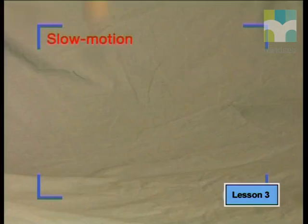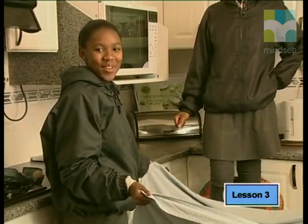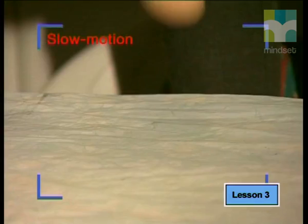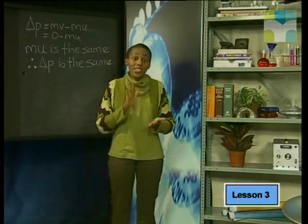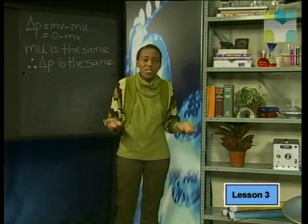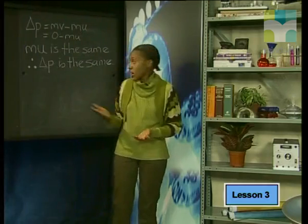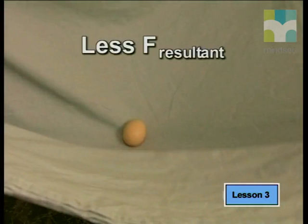Once again, we get Tandi to drop a raw egg from a height of 1.5 meters. The egg doesn't break this time — the sheet saved it. The egg traveled at exactly the same velocity when it hit the tabletop as it did when it hit the sheet, because it fell from exactly the same height in both cases. Therefore, the change in momentum is the same in both cases. So what is different? Do you agree that the resultant force exerted by the sheet on the egg was somehow less than that of the tabletop? But why?